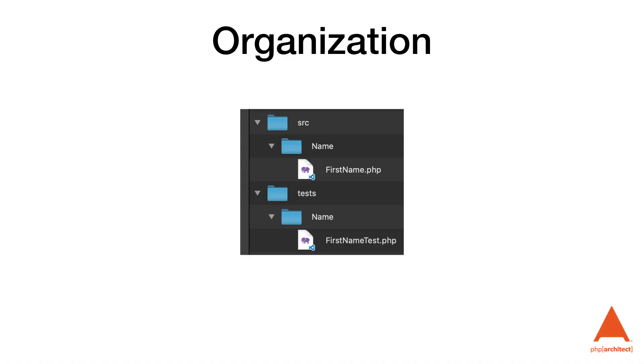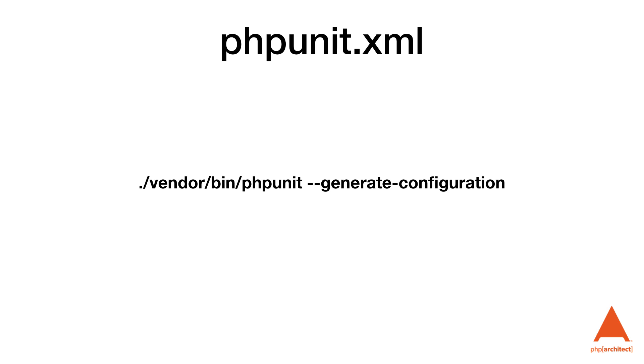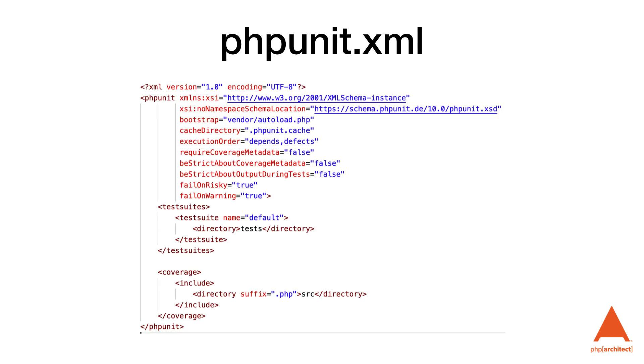PHPUnit uses PHP classes to group similar tests together. We almost always want a test class for each application class that has logic. We generally don't write tests for models that have no logic and are only there for our framework's ORM or to house constants. My suggestion is that you should be able to easily go from the file you're working on to its associated tests — I do this by simply replacing 'source' with 'tests'. The only other thing we need to get started is a phpunit.xml file in the root of our project. This file will be loaded automatically by PHPUnit when it loads. To generate it initially, we'll use `vendor/bin/phpunit --generate-configuration`, which will then prompt us for some information.